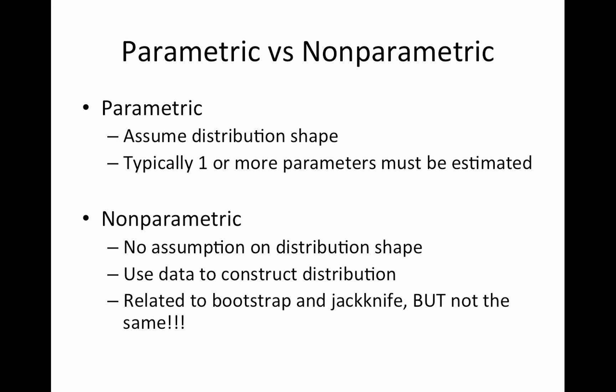So I've talked about this before, parametric versus non-parametric. Parametric assumes some shape to the distribution. There are parameters associated with that distribution, one or more. T distribution has degrees of freedom. Normal distribution has the mean and the variance. Non-parametric has no assumption on the distribution shape and you use your data to construct the distribution.